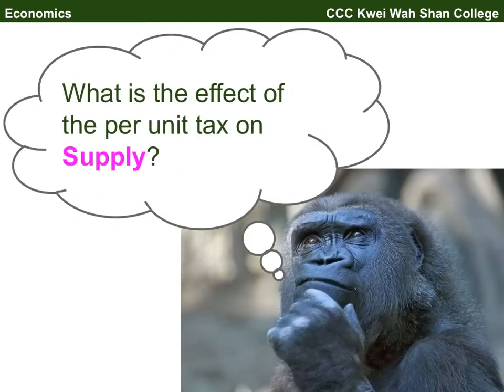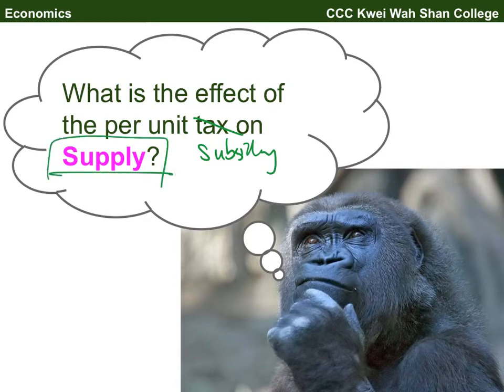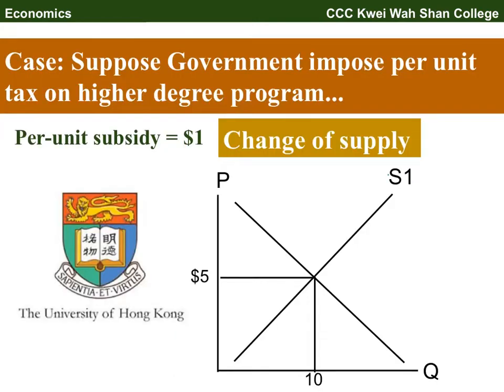Starting with the immediate effect of the subsidy: the subsidy is collected by the producer first, so supply belongs to the producer. If you are the producer, you will save some money, which encourages you to sell more. So supply will increase in order to get the subsidies.